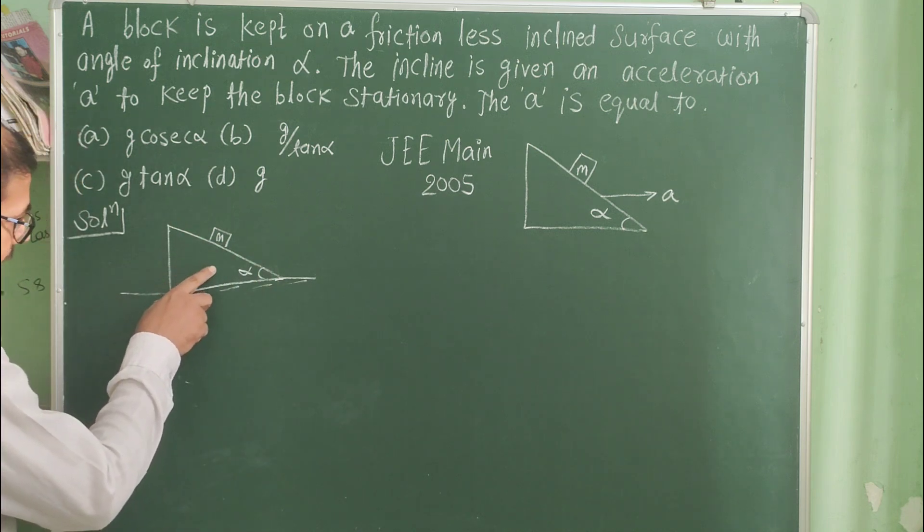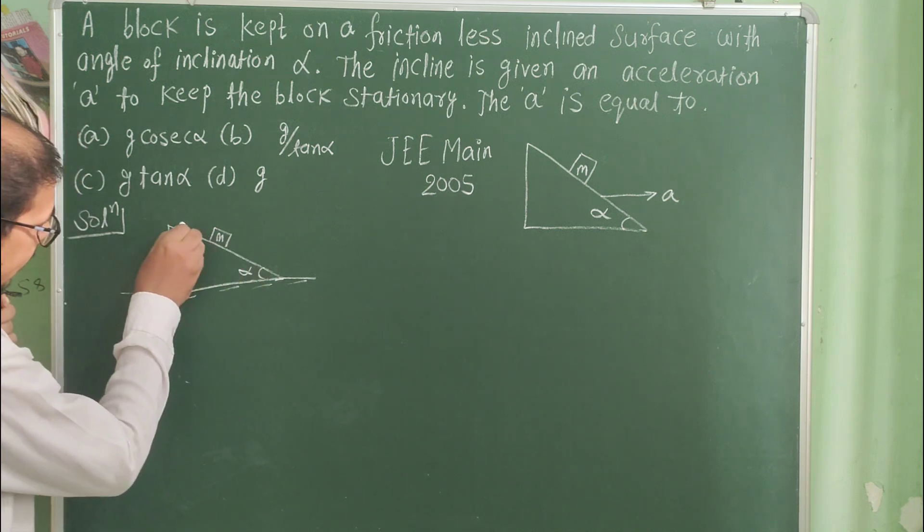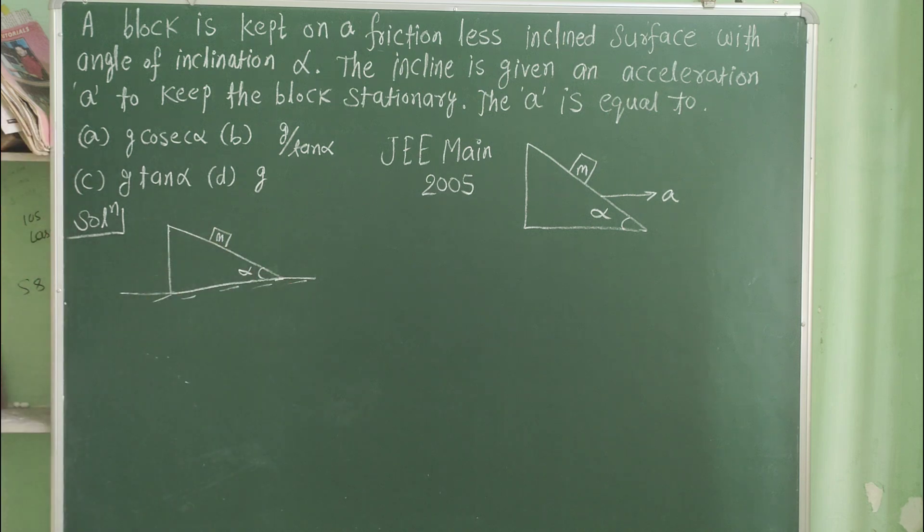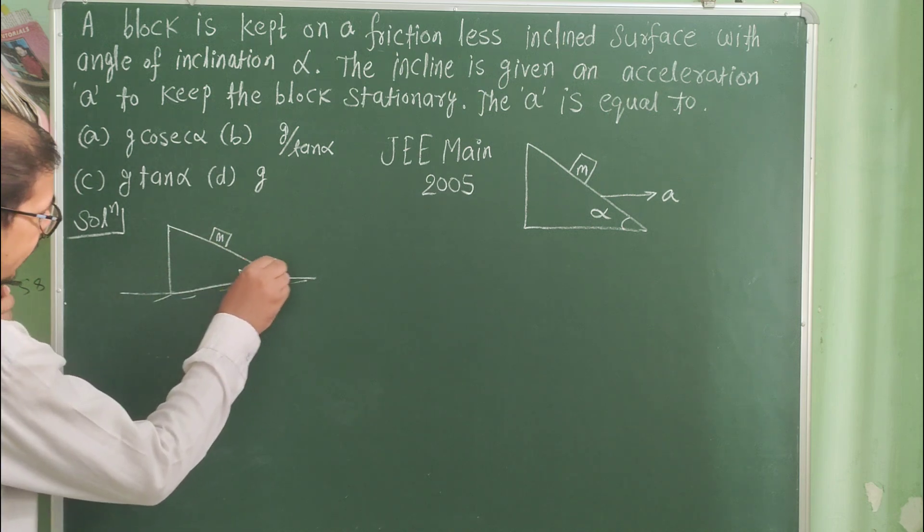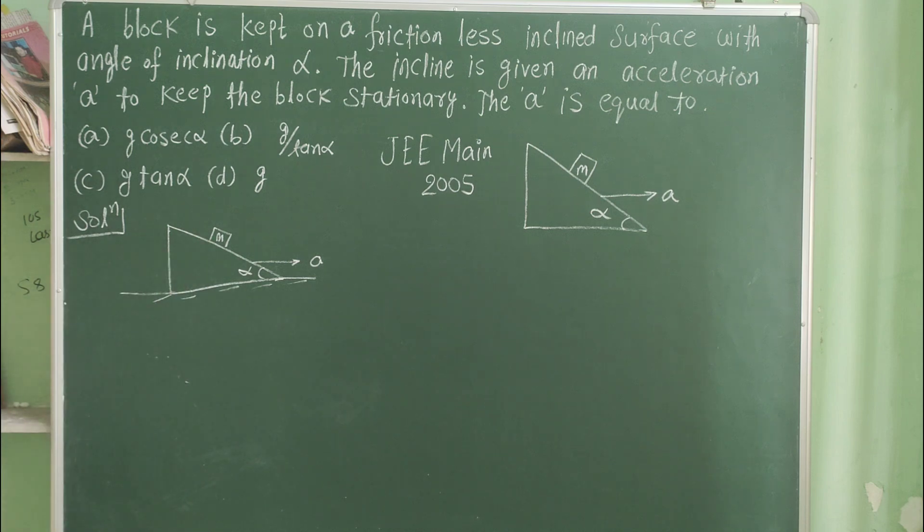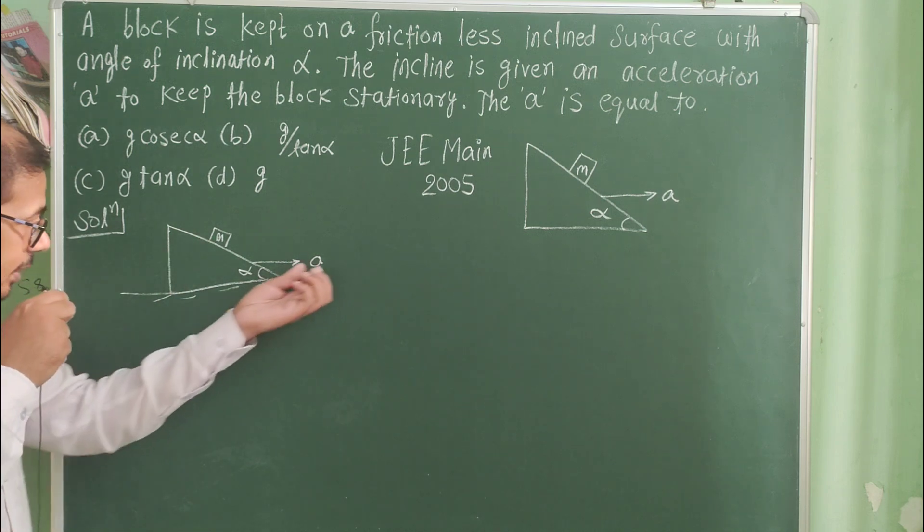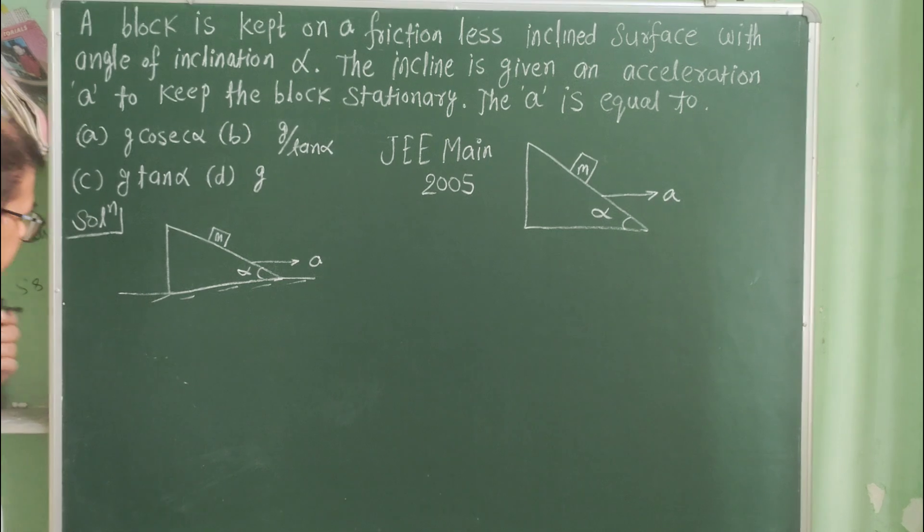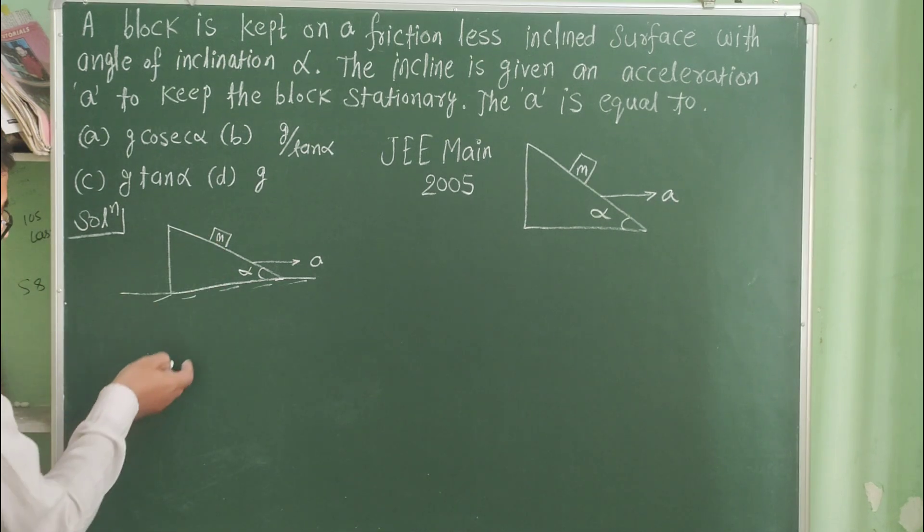If the incline is at rest, the block will be falling along the inclined plane. We have given the acceleration A to the inclined plane, so the block remains at rest. Now we have to calculate the value of A where the block is at rest with respect to the inclined plane.